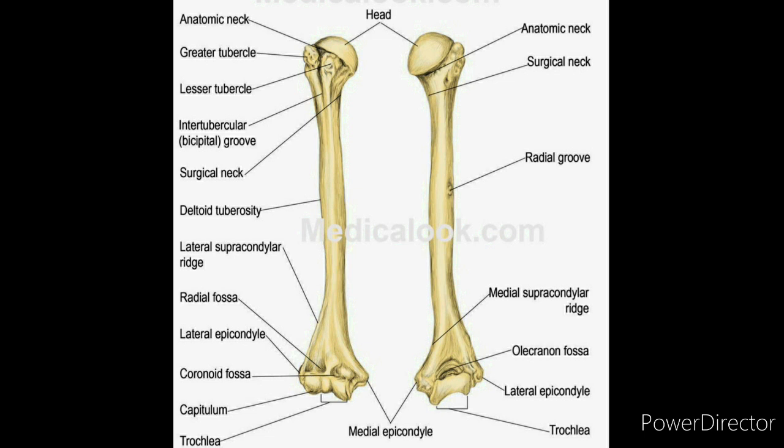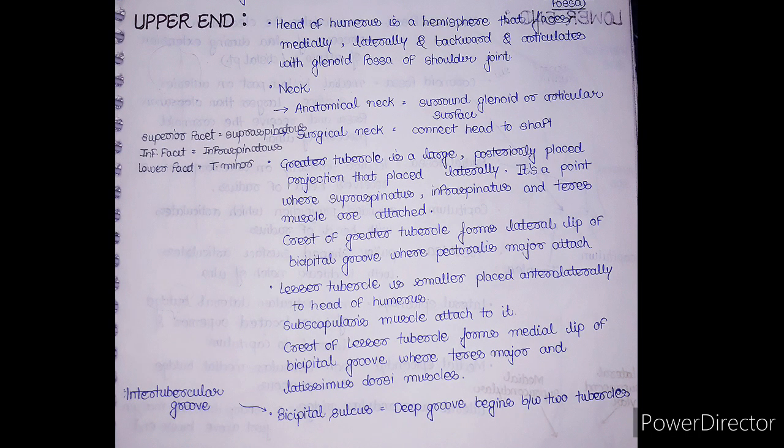On the lower end of the posterior view, there is the olecranon fossa, where the olecranon process of the ulna attaches. The olecranon process is palpable — you can easily feel or see it at the elbow joint. Now let's study the upper end in detail. The upper end has three things: a rounded head, a narrow neck, and two processes. The head of the humerus is hemispherical.